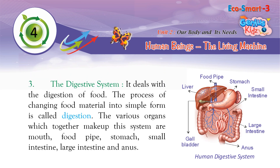The Digestive System deals with the digestion of food. The process of changing food material into a simpler form is called digestion. The various organs that make up this system are the mouth, food pipe, stomach, small intestine, large intestine, and anus.